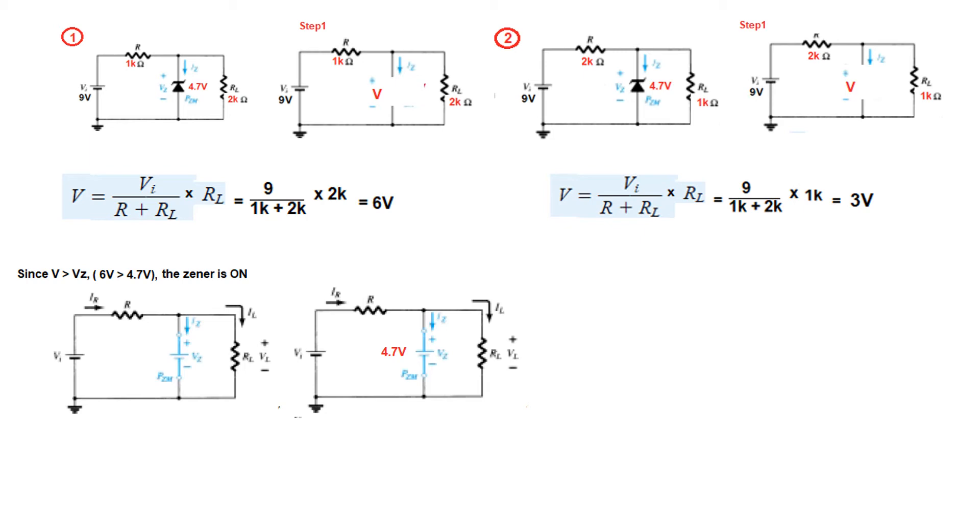Now in the first case 6 volt is greater than 4.7 volt. So V is greater than VZ and therefore the Zener is on. So when the Zener is on we replace it with an equivalent voltage source of 4.7 volt.